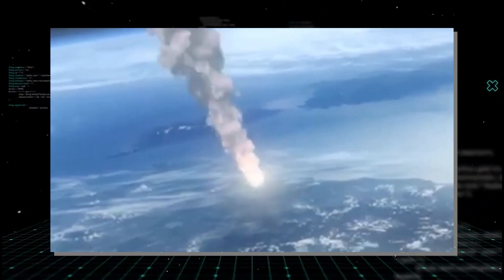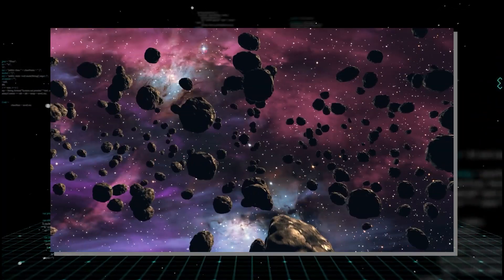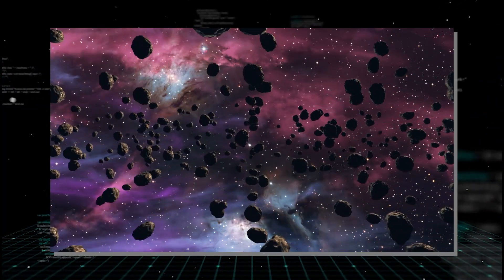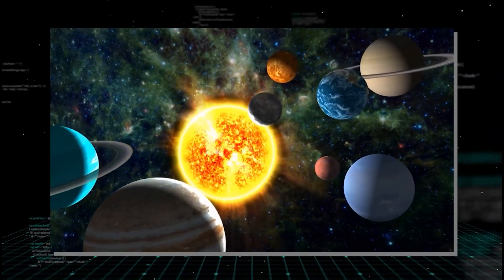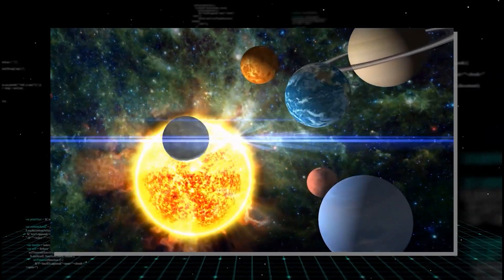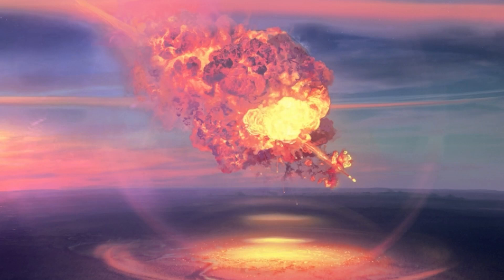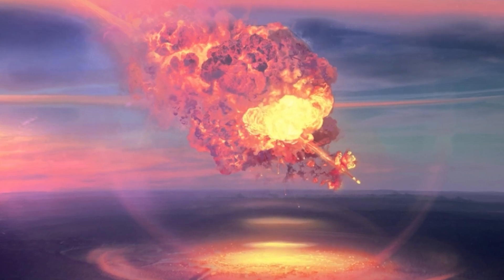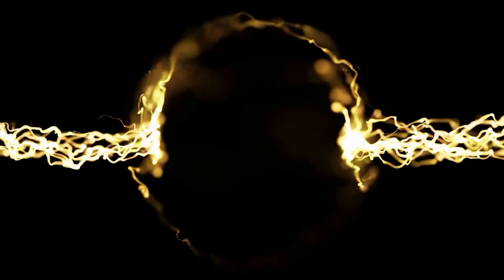Second, the bizarre energy-to-mass ratio pointed to another shocking idea. What if the object wasn't a normal rock, but was made of exotic matter? If the object contained elements or states of matter not found in our solar system, like a tiny piece of a neutron star or strange matter, it would explain both the incredible energy release and the complete lack of a crater or significant physical debris. It would have annihilated itself in a flash of pure energy.